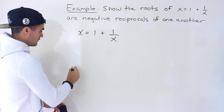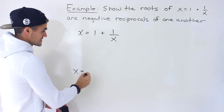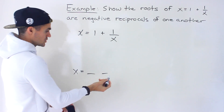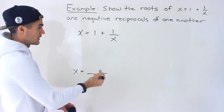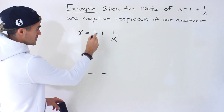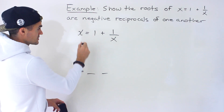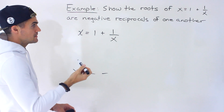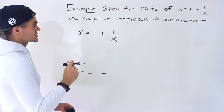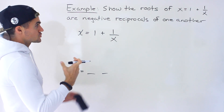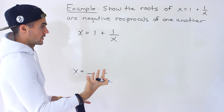Our final values are going to be x equals — there's going to be two solutions, right? Those are the roots. That's another word for finding the solution or the x values that make the left side equal to the right side. And then what we're going to notice is that the roots are negative reciprocals of one another.